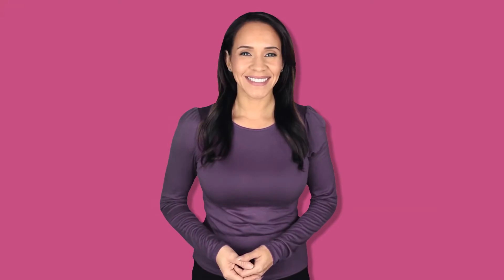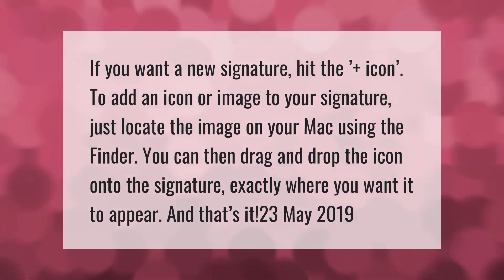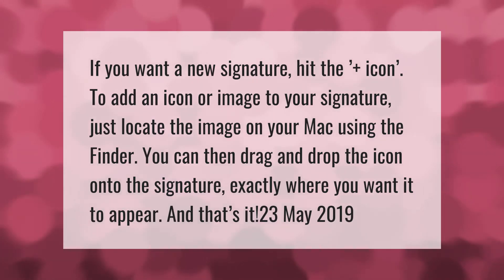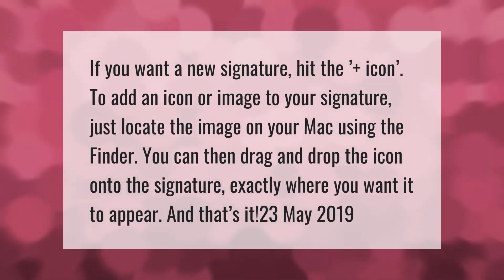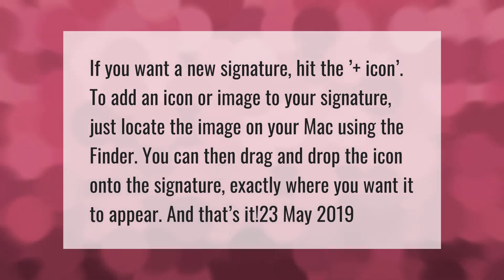If you want a new signature, hit the plus icon. To add an icon or image to your signature, just locate the image on your Mac using the Finder. You can then drag and drop the icon onto the signature exactly where you want it to appear, and that's it.